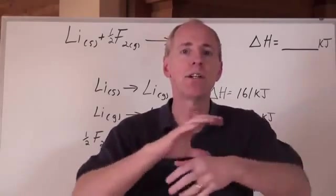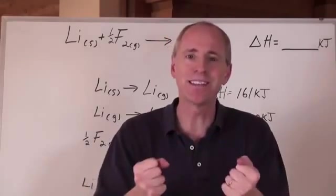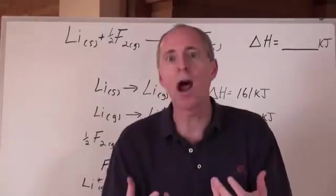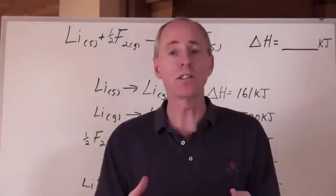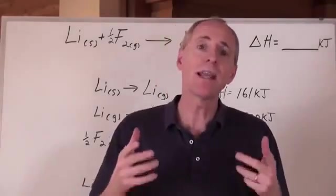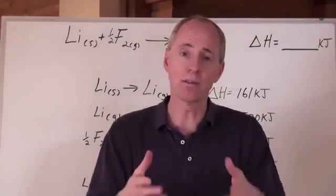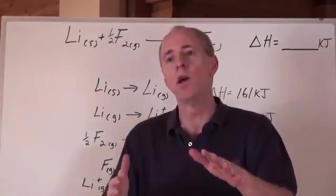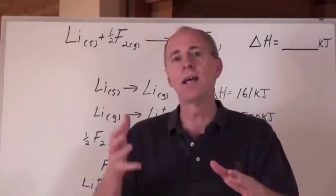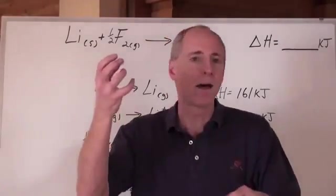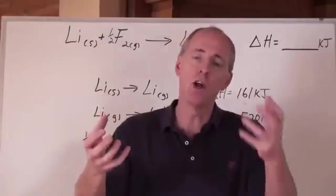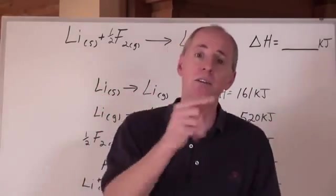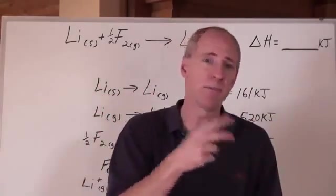How can we figure out how much energy is possessed in a chemical bond? How can we describe that? Let's take ionic compounds and the formation of ionic compounds — very simple — where we just take a metal and a non-metal and put them together to form a binary ionic compound.